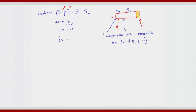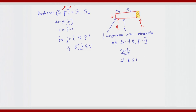For j equals l, you need to start scanning from the first element to p minus 1. You want to check if the j-th element s[j] is indeed less than or equal to v. Our goal is: for all k less than or equal to i, we want s[k] to be less than or equal to v, and for k greater than i, we want s[k] to be greater than v.